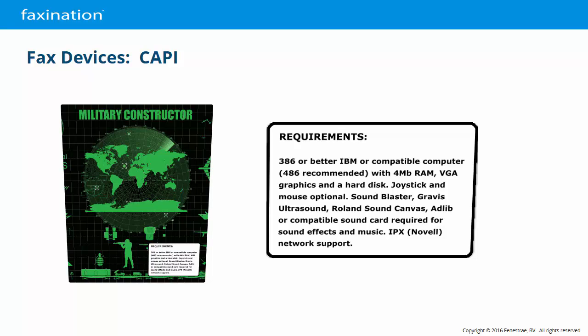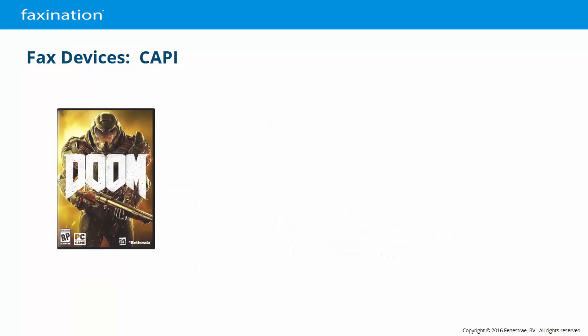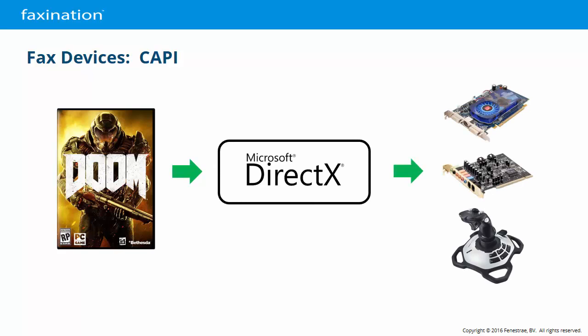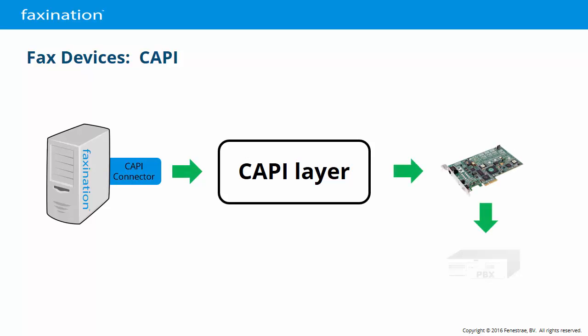As long as there was a Windows driver for your hardware, it was compatible with your video game. CAPI works in the same way — FaxNation's CAPI device connector talks to the CAPI layer, which then talks to the fax card. The CAPI layer is provided by the card manufacturer, and that includes the configuration interface. FaxNation has no knowledge of the fax hardware or line type; it talks to all CAPI devices in the same way.